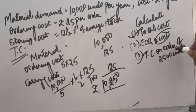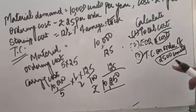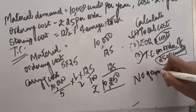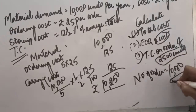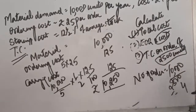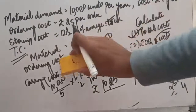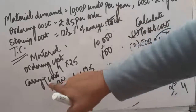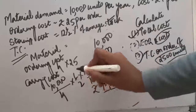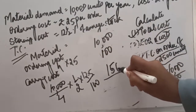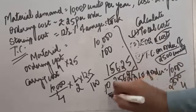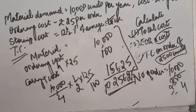For the third part, an order of 2500 units is placed, so EOQ is taken as 2500. With annual demand of 10,000 and 2500 per order, the number of orders is 4. Material cost remains 10,000. Ordering cost is 4 into 25 equals rupees 100. Carrying cost with 4 orders gives 156.25. Adding all three components, total cost equals rupees 10,256.25 when 2500 units are ordered per batch.